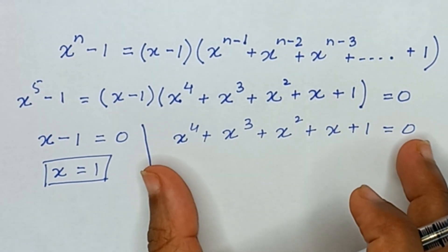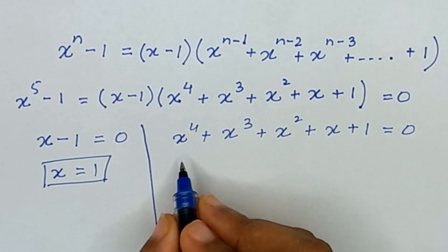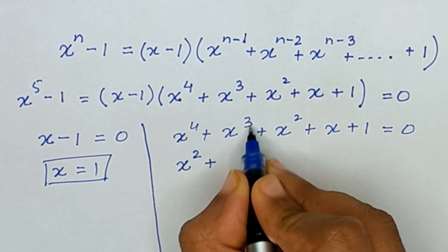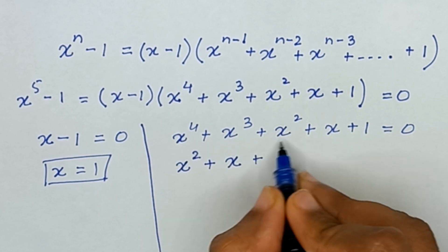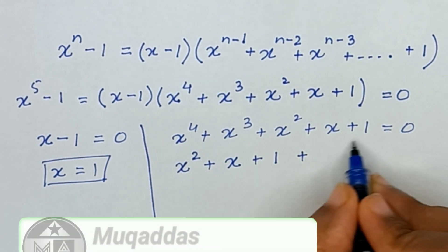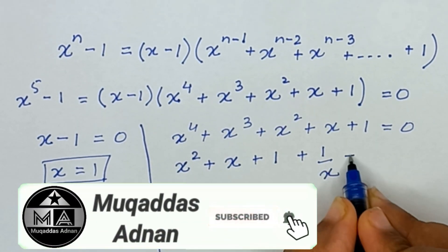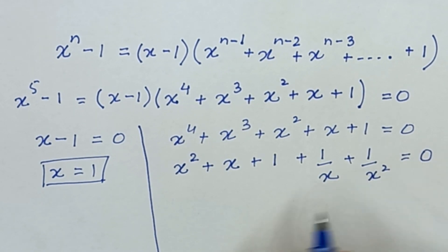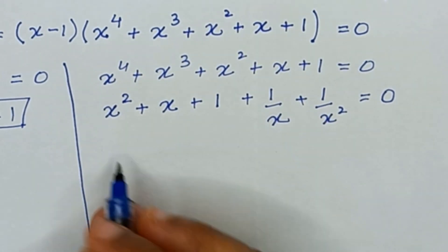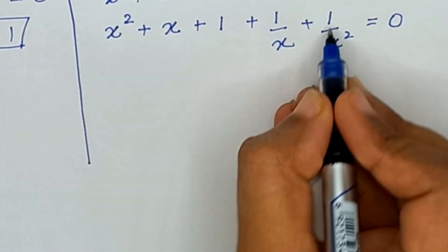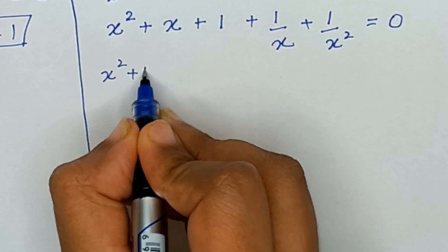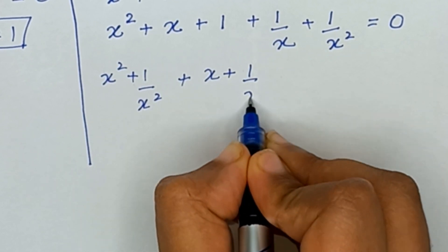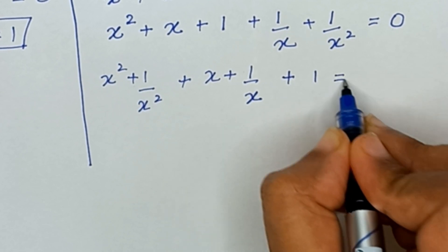We will divide the whole equation by x squared. So x⁴ divided by x² gives x², x³ divided by x² gives x, x² divided by x² gives 1, x divided by x² gives 1 over x, and 1 divided by x² gives 1 over x². The right side 0 divided by x² remains 0. Rearranging, we get x squared plus 1 over x squared plus x plus 1 over x plus 1 equals 0.